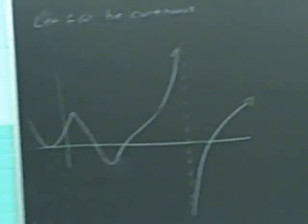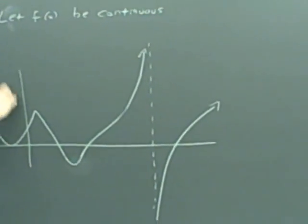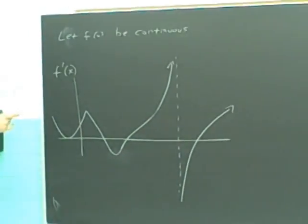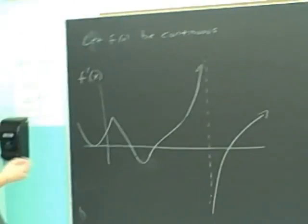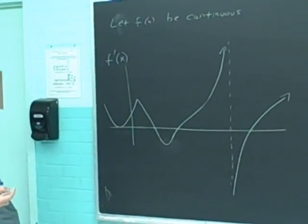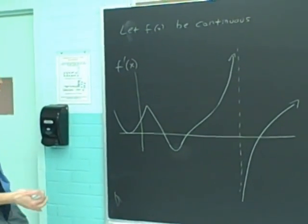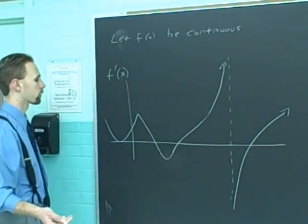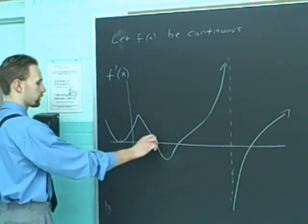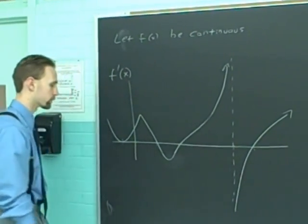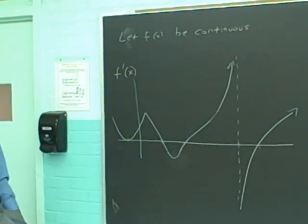Another way that the information could come to you is if you have a continuous function and this is the graph of its derivative. Given the graph of its derivative, can we identify the relative extrema of f? The answer is yes. All we have to do is look for sign changes. First, how many critical numbers are there? Where is the derivative zero or undefined? It's zero here, here, here and undefined there and zero at the end. So those are candidate points for maxes and mins.